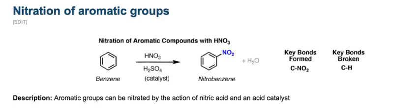We start with benzene, and if you treat benzene with nitric acid and sulfuric acid, sulfuric acid is our catalyst here, we will form nitrobenzene. We've broken a carbon-hydrogen bond and formed a carbon-nitrogen bond, putting a nitro group on our benzene.